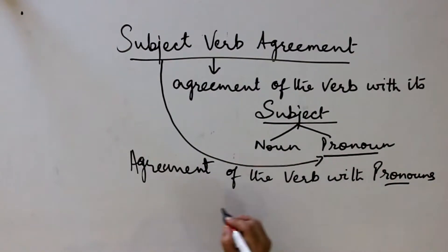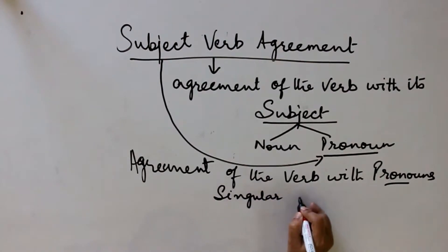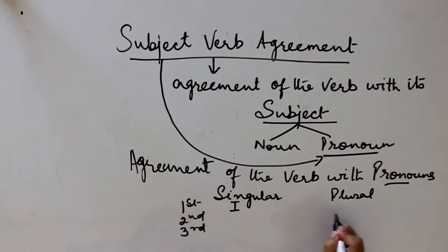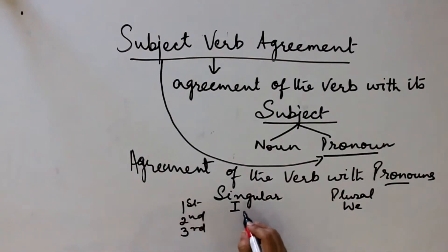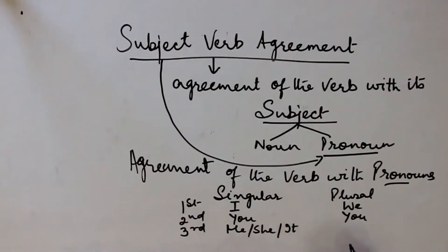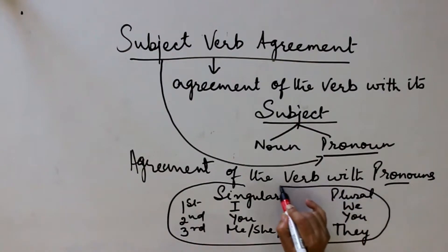Before I start with this topic, let us first know about singular and plural persons. In singular form, we have first person, second person, and third person. First person singular is 'I'; plural becomes 'we.' Second person singular is 'you'; plural is also 'you.' Third person singular is 'he,' 'she,' or 'it'; and the plural form becomes 'they.' Now today we will study how the verb accommodates with these pronouns.